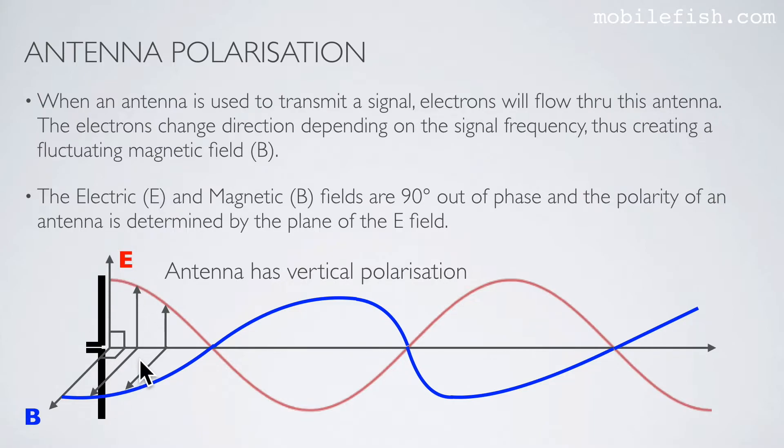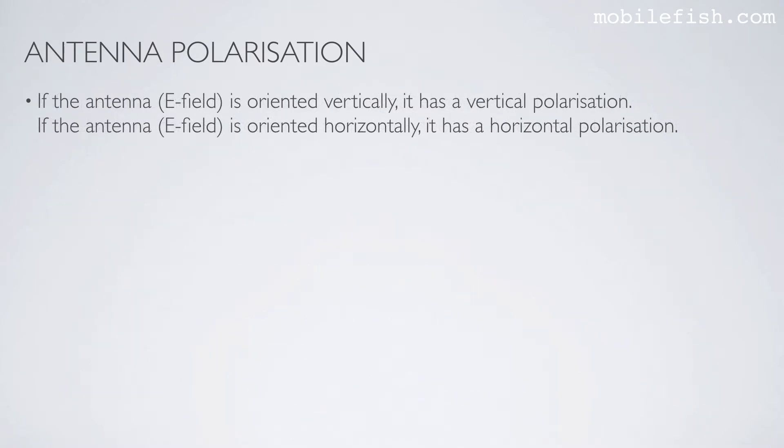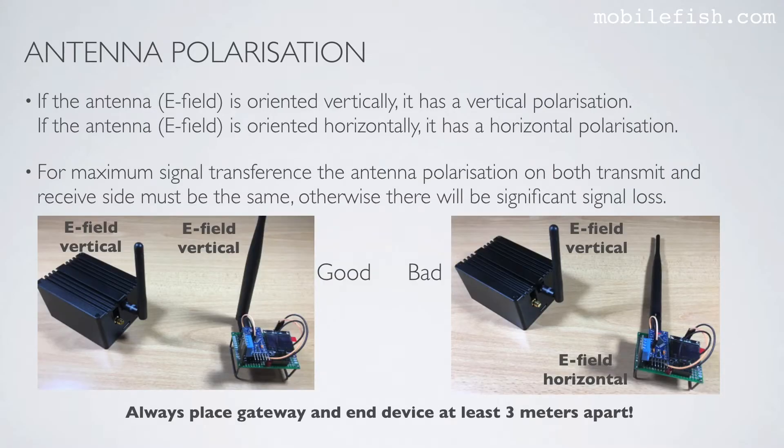In this example, the electric field is in vertical direction. This means the antenna has a vertical polarization. If the antenna, meaning the electric field, is oriented horizontally, it has a horizontal polarization. For maximum signal transference, the antenna polarization on both transmit and receive side must be the same, otherwise there will be significant signal loss.